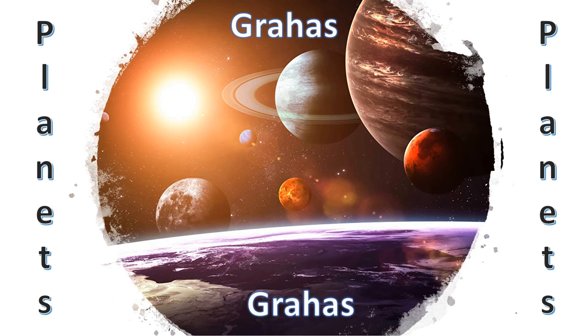The word planet is used to denote a celestial body that orbits, or in other words revolves, around some star. For example, planets like Mars, Mercury, and Jupiter orbit around the Sun, which is a star.